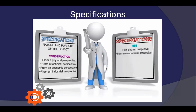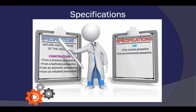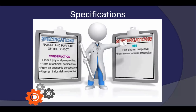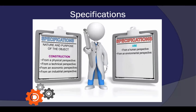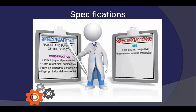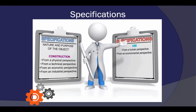On page 379, it discusses six perspectives to consider in developing specifications. Four of them concern manufacturing and two relate to its use.